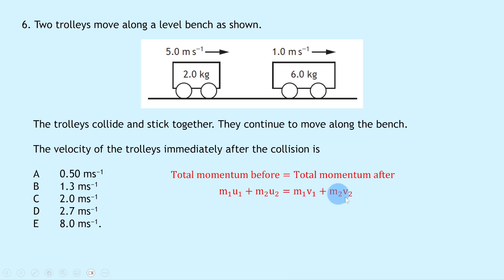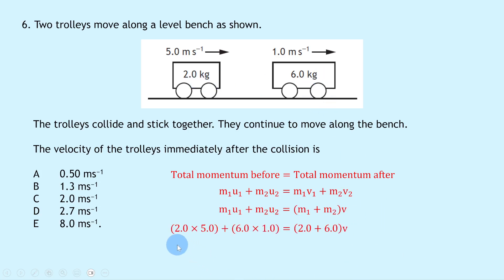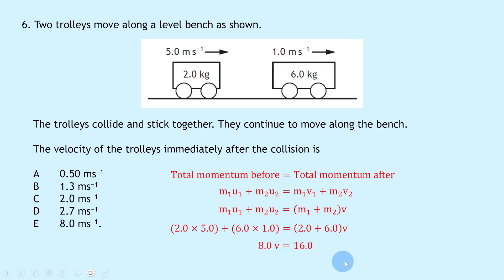Substituting in: (2.0 × 5.0) + (6.0 × 1.0) = (2.0 + 6.0) × V. This gives 10 + 6 = 8V, so 8V = 16, and V = 2.0 metres per second, which is answer C.